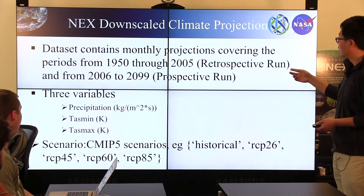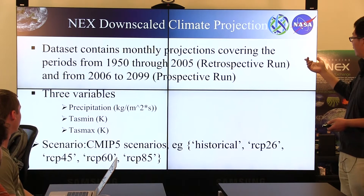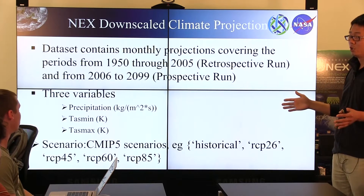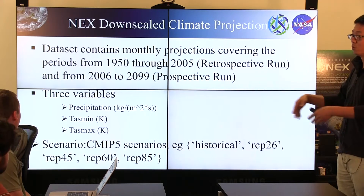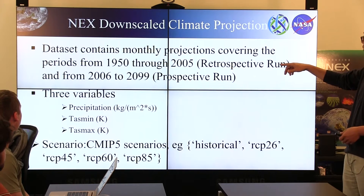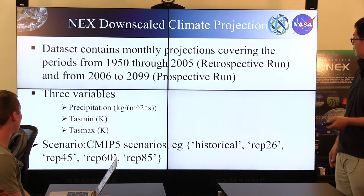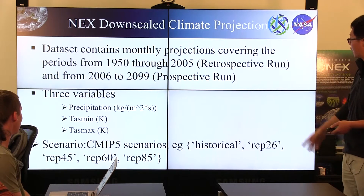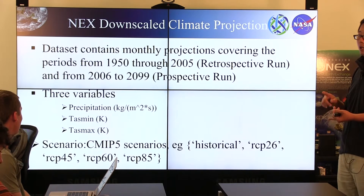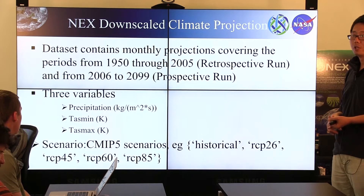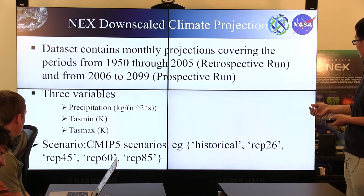This dataset was introduced to Google Earth Engine last year. In Google Earth Engine, we have the dataset from 1950 to 2005 — that is the historical data, generated using a retrospective run with these models. Then we have a projection dataset from 2006 to 2099. In each dataset there are three variables: precipitation, monthly maximum temperature, and minimum temperature.